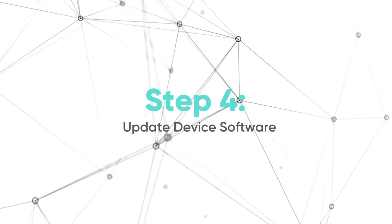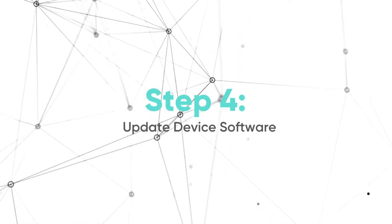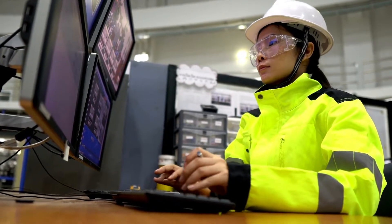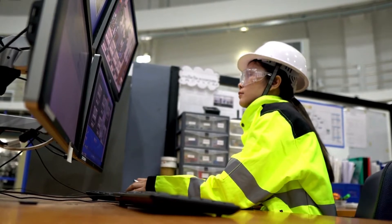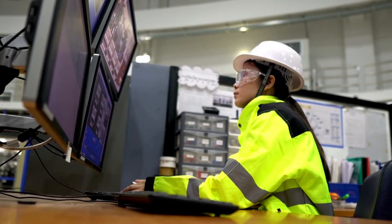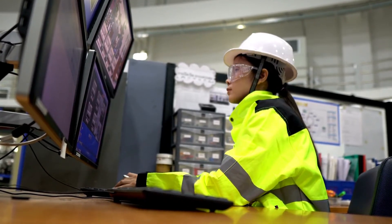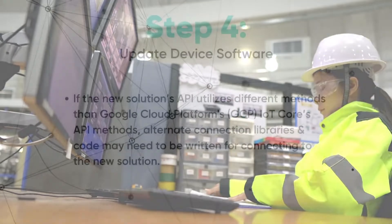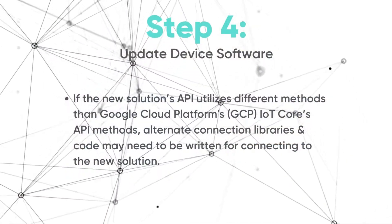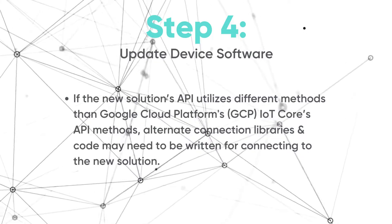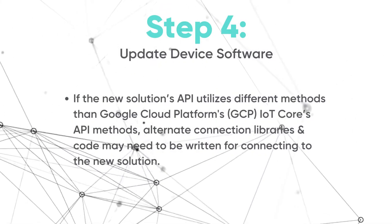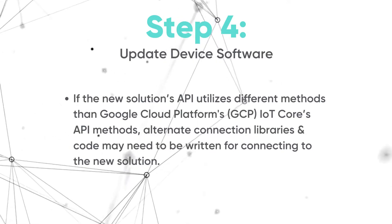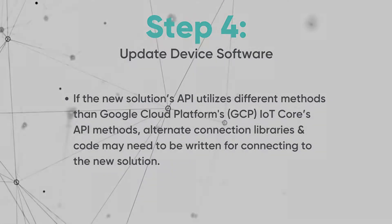Step four: update device software. If utilizing a partner solution that uses the same API methods as GCP IoT Core, updates on the device may be as simple as changing the URL endpoint for messages. Alternate connection libraries and code may need to be written for connecting to the new solution if the new solution's API uses different methods than GCP's IoT Core API.